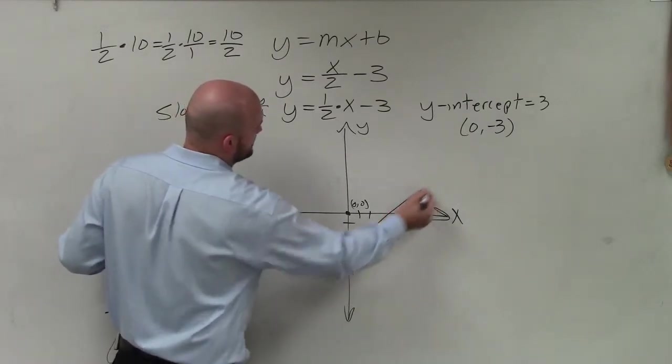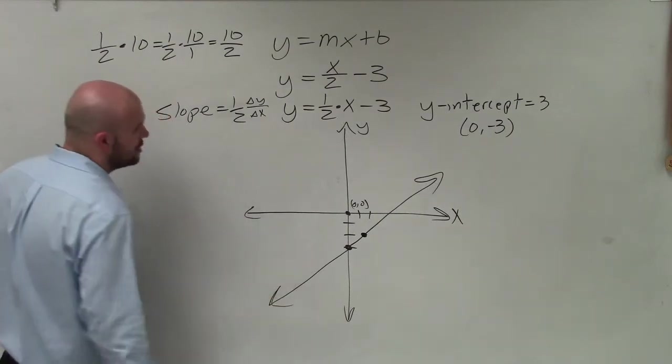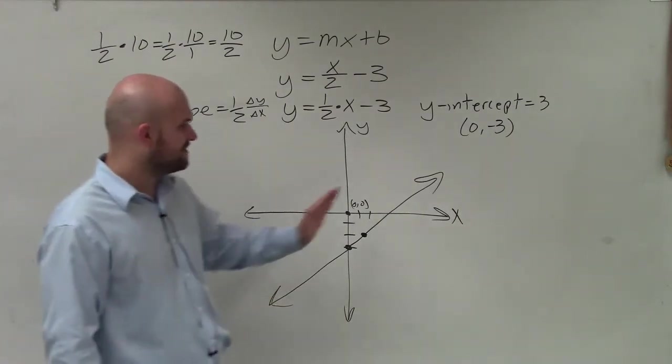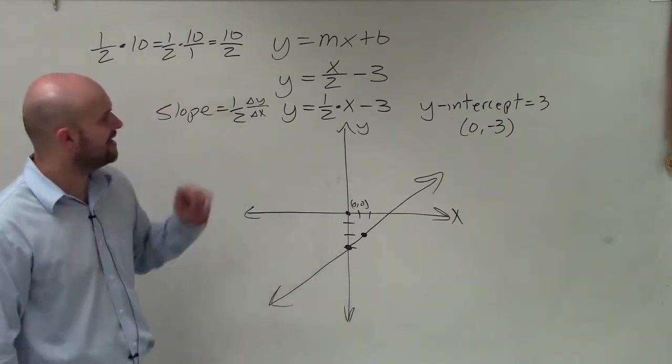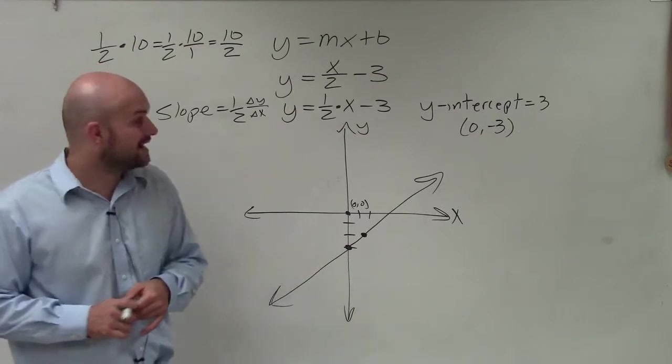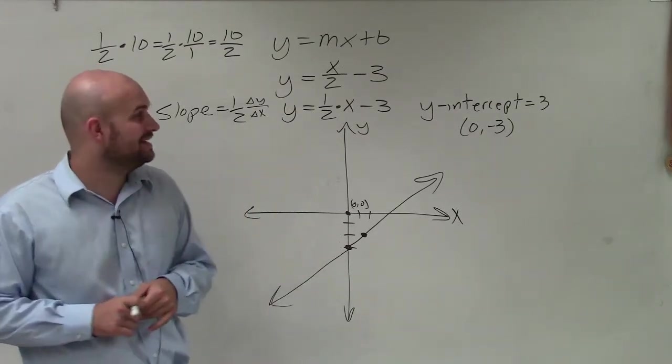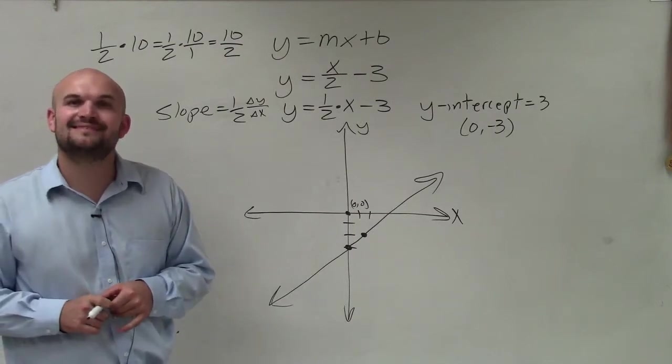And I only need two points to create my line. However, I can continue using this ratio of slope to help me find more points. But just having two points, I've done enough. So there you go, ladies and gentlemen. That is how you graph the equation of a line. Thanks.